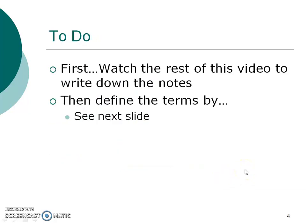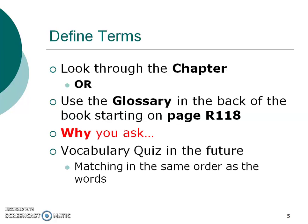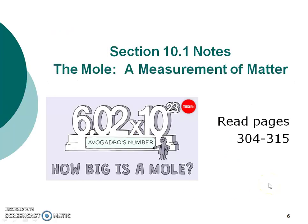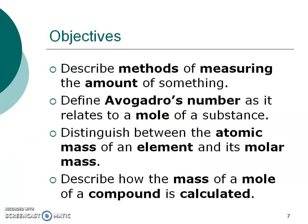So just as always, you're going to watch the rest of the video and then define the terms by either going through the chapter or in the glossary in the back of your book. And yes, you'll have that matching quiz in the near future. So Section 1 is on the mole — a measurement of matter. In this section, you're going to describe methods of measuring the amount of something, define Avogadro's number as it relates to a mole of a substance, distinguish between the atomic mass of an element and its molar mass, and describe how the mass of a mole of a compound is calculated.